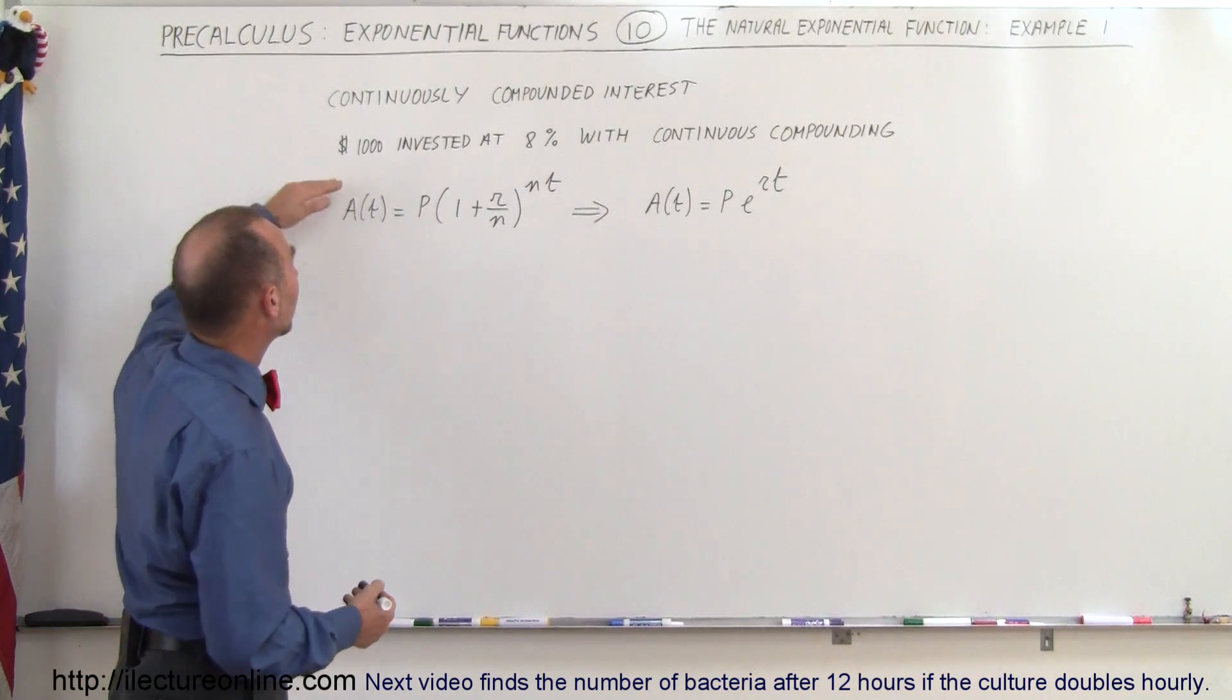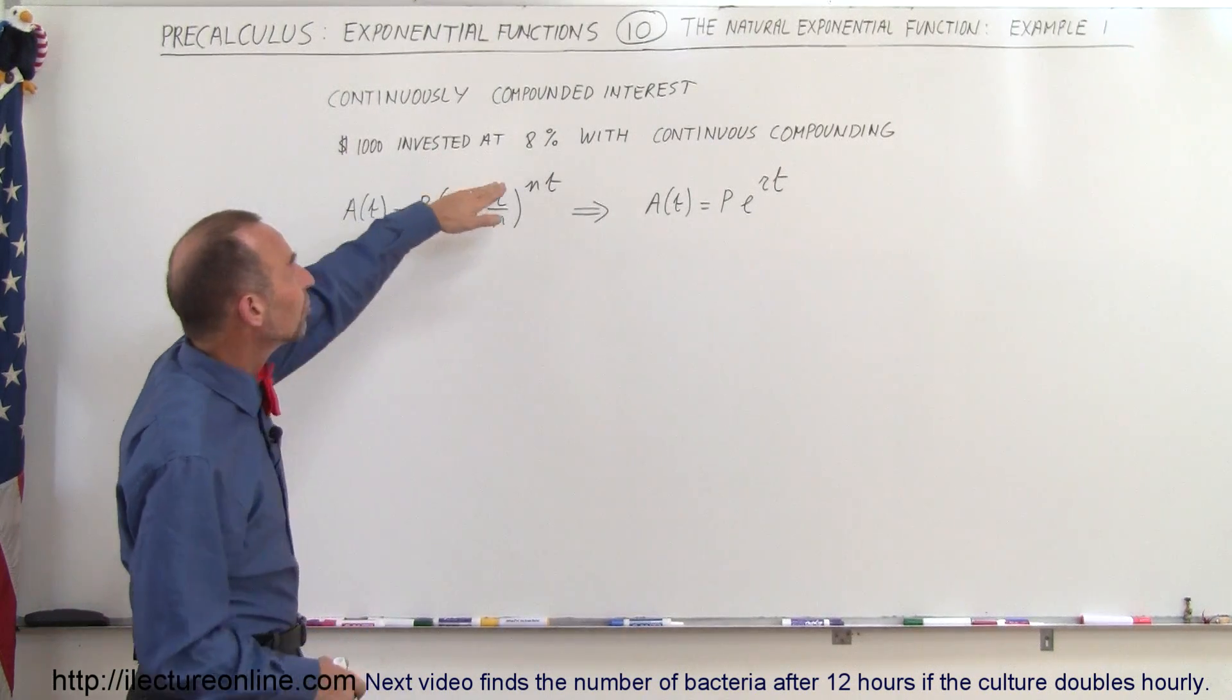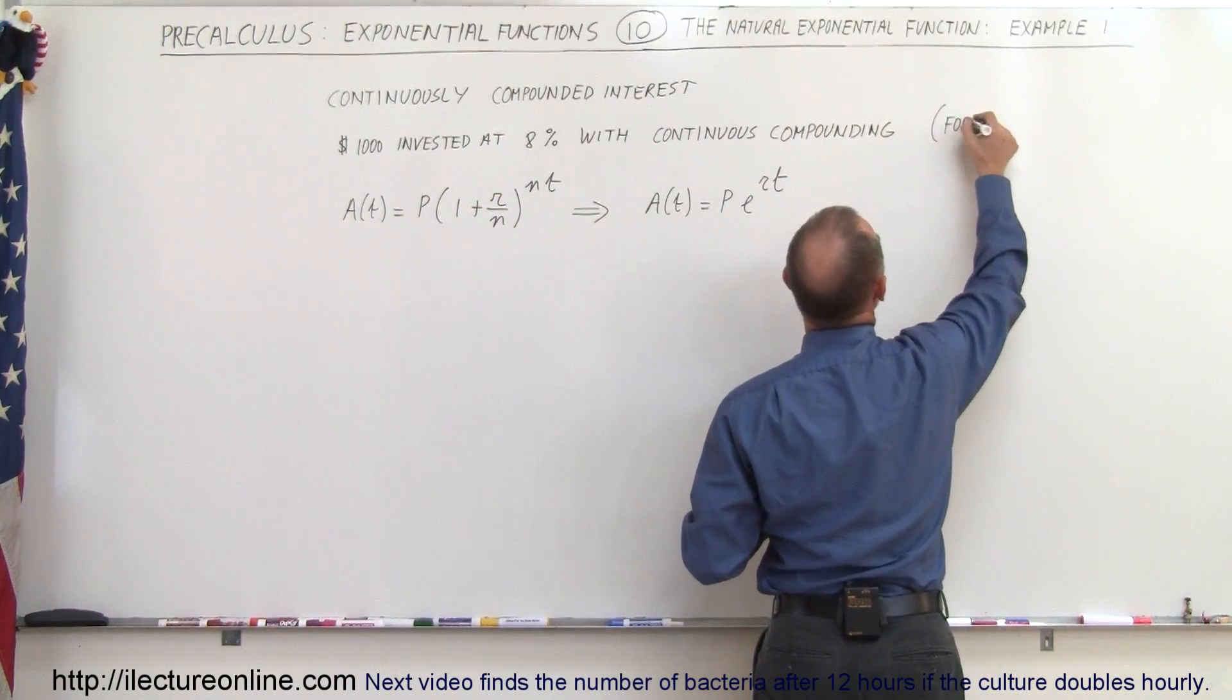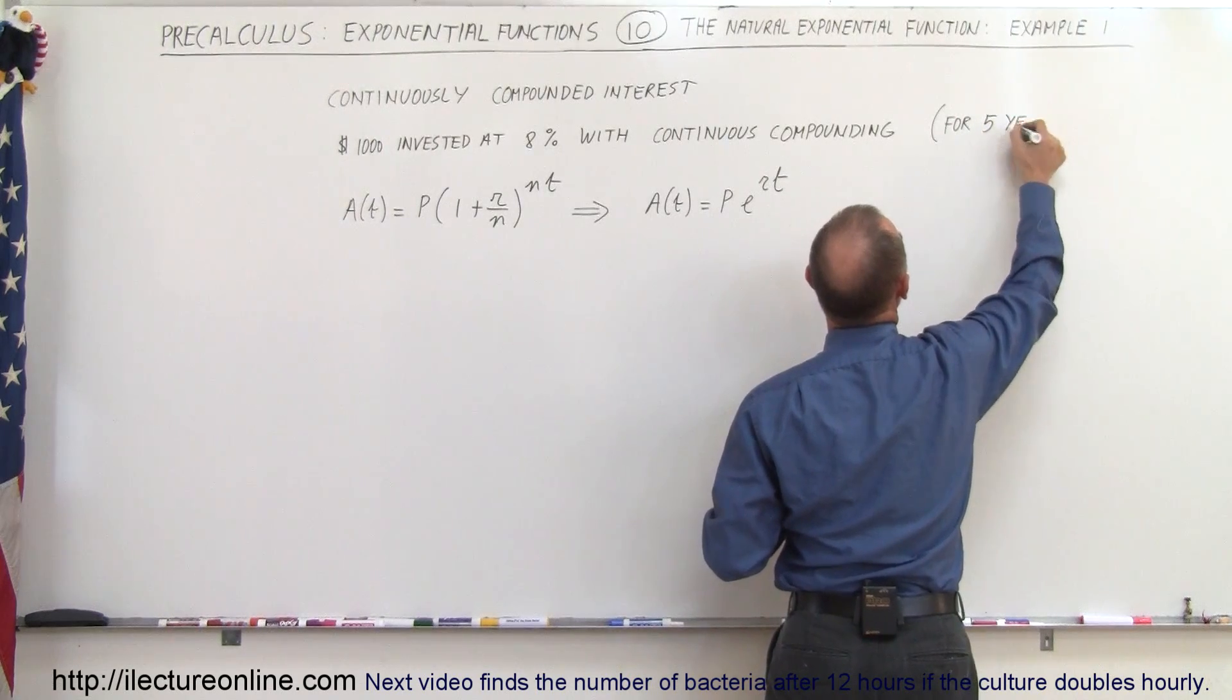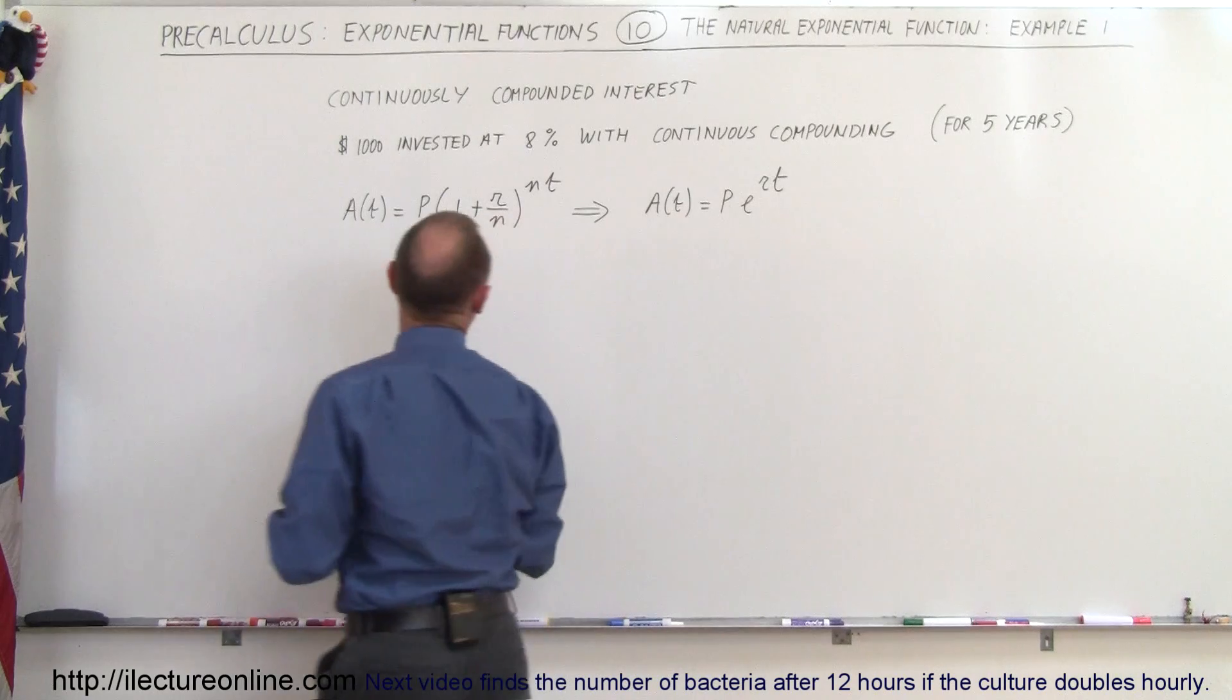So let's go ahead and calculate a thousand dollars invested at eight percent for five years using continuous compounding. So in other words use a natural exponential function.